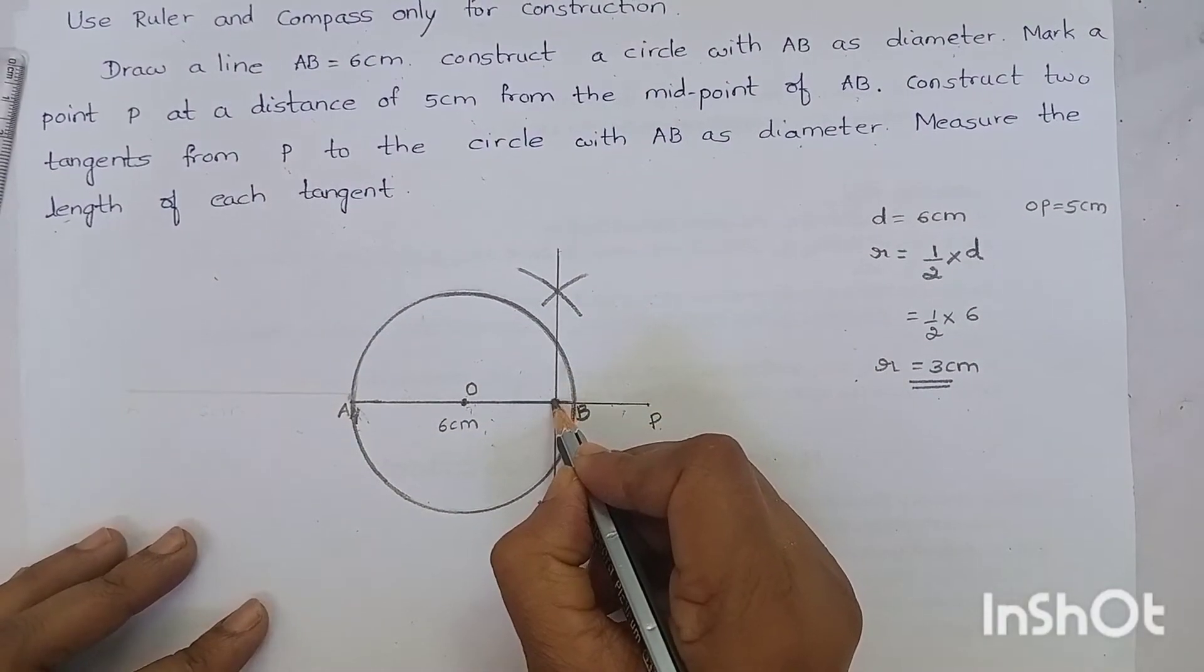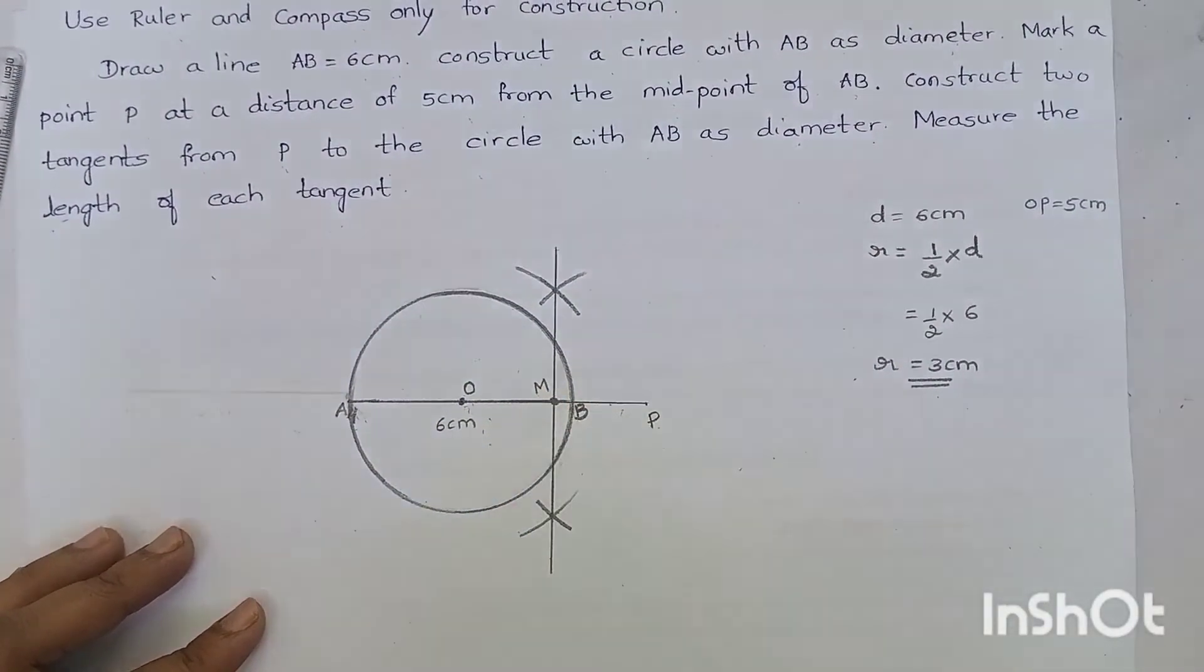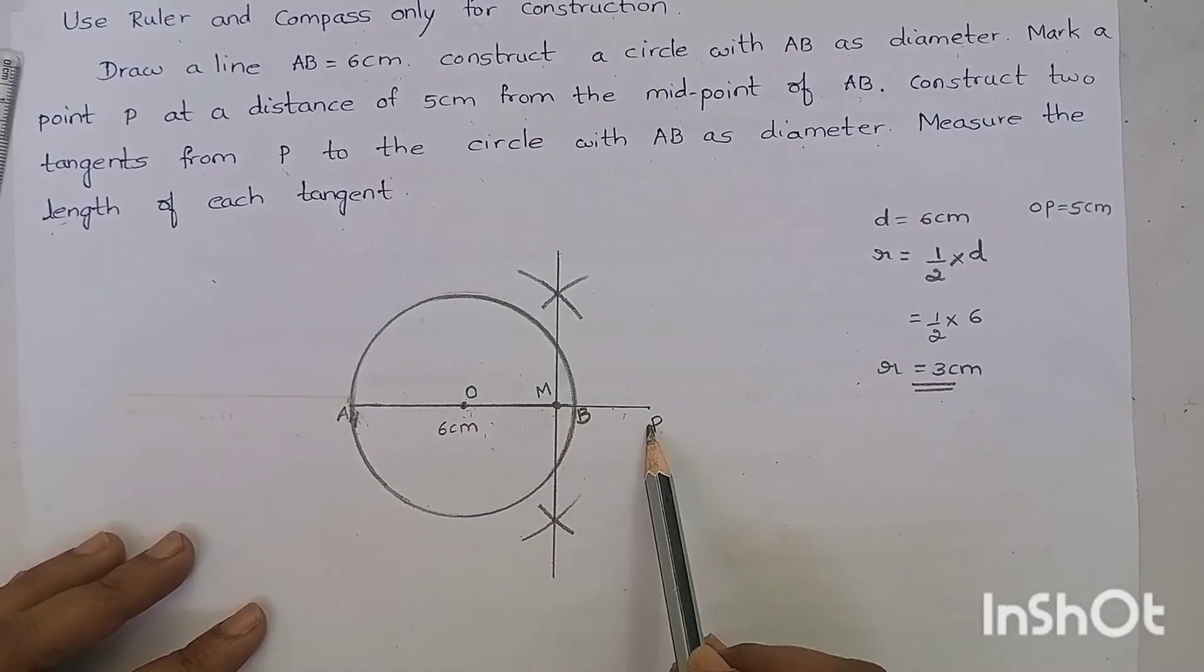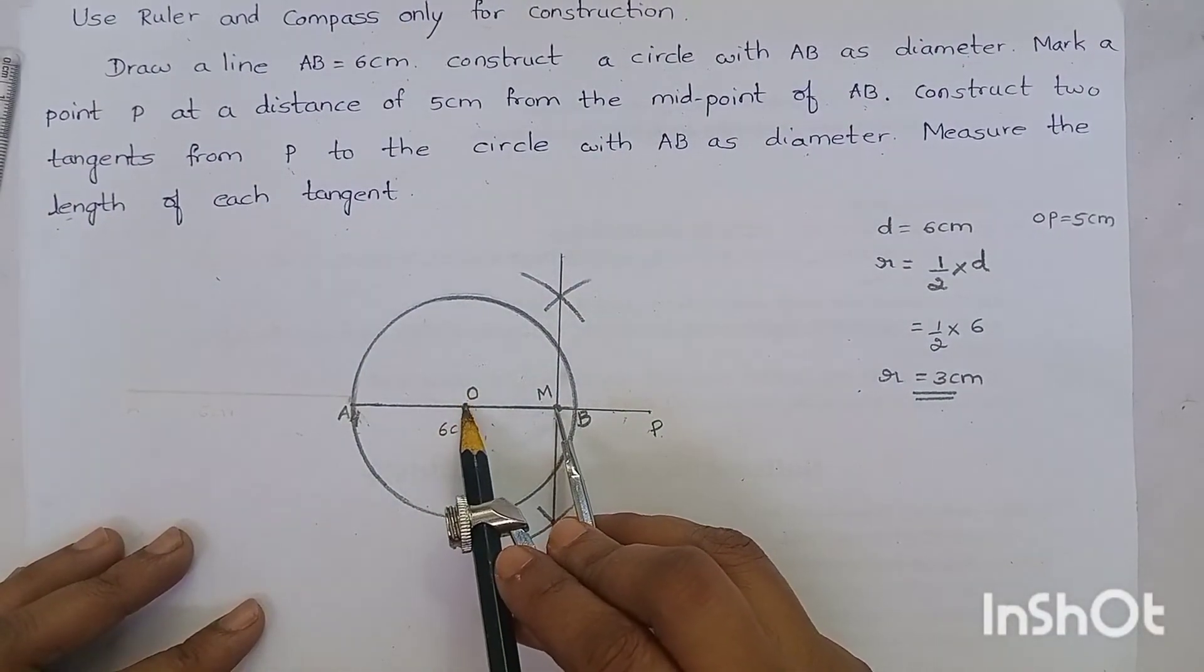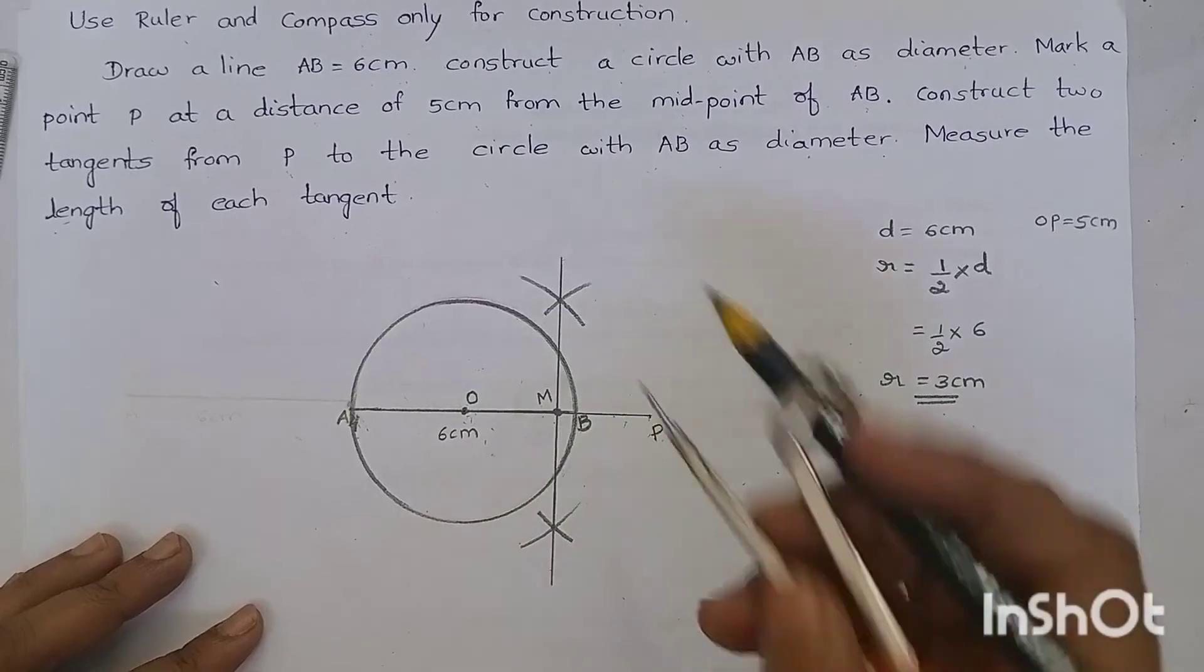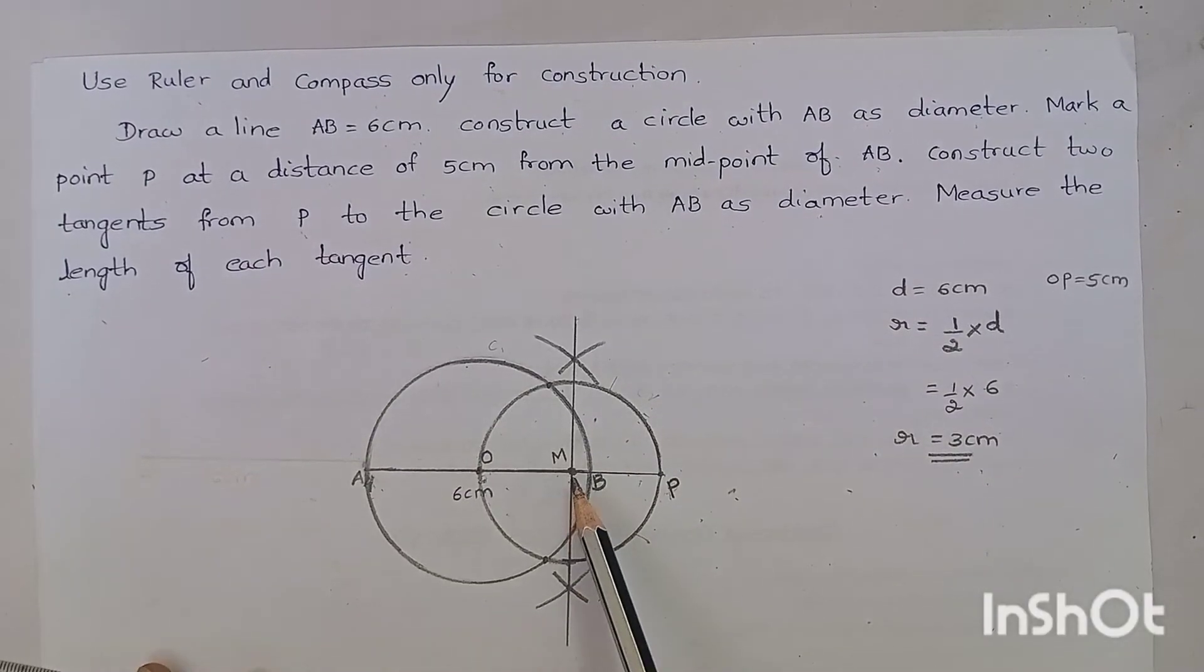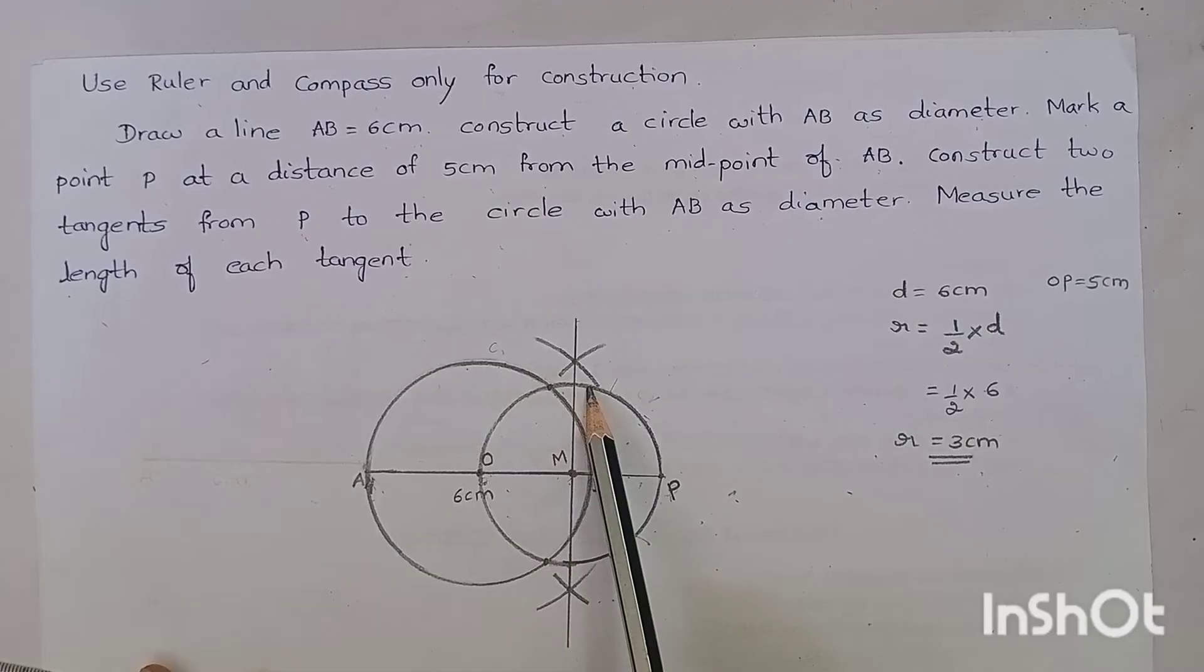And we got this point. Now, keeping M as center and OM as radius or MP as radius, draw a circle. Now, keeping OM as radius, draw a circle. We have constructed a circle keeping OM as radius. And here you can see two circles now. Isn't it? Circle 1 and circle 2.